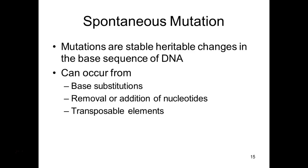Base substitutions can happen — those nitrogenous bases, the A's, G's, T's, and C's, that code. If we substitute one for another, say instead of putting an A we put a G, depending on where that change is we may produce a different amino acid. Because sometimes it will result in a change and other times it won't, or even worse sometimes it will cause us to put a stop codon there, there are three different possible outcomes from a base substitution.